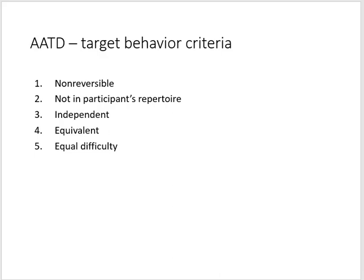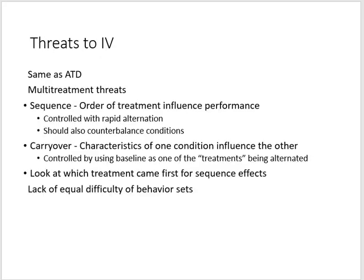For adapted alternating treatments, we can use non-reversible behavior — something not yet in the participant's skill set. The two behaviors should be independent, equivalent in function, and of equal difficulty level. The threats are similar to the ATD: multi-treatment threats should be named in limitations. We control for sequence and carryover through rapid alternation, randomization, and counterbalancing. We should get expert opinion or do piloting to ensure the behaviors are functionally equivalent, of the same difficulty level, and independent.